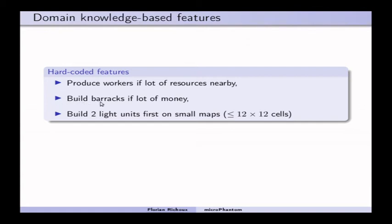It will produce more barracks if he cannot spend all the money quickly, and it will also produce the two units that can be trained as fast as possible, and in the regular rules, those are light units, on small maps.